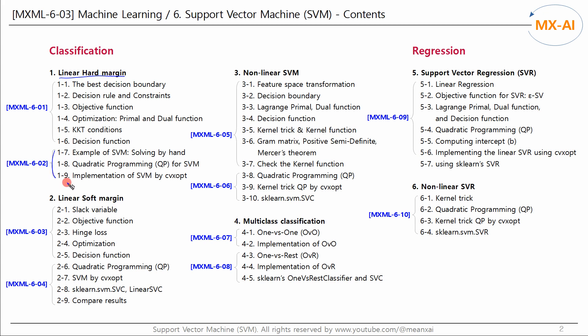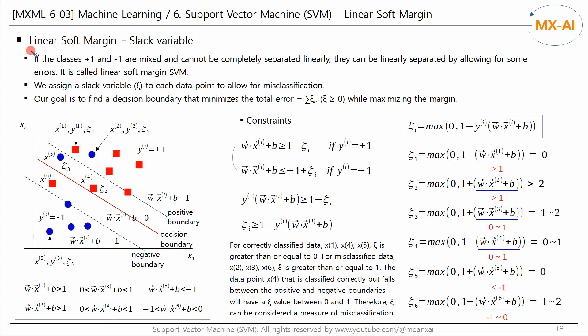In this and the next video, we will look at the linear soft margin SVM. The linear hard margin SVM was only possible if a straight line could completely separate the two data clusters without any misclassification. When the linear hard margin SVM cannot completely separate two clusters, the linear soft margin SVM is used. When classes positive 1 and negative 1 are mixed and cannot be completely separated linearly, they can be linearly separated by allowing for some misclassifications.